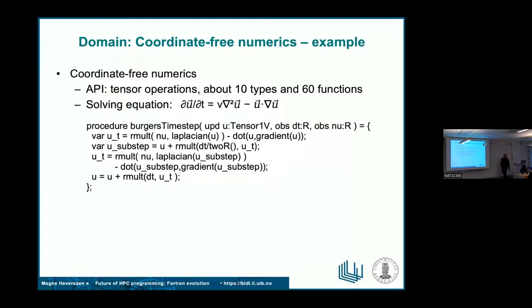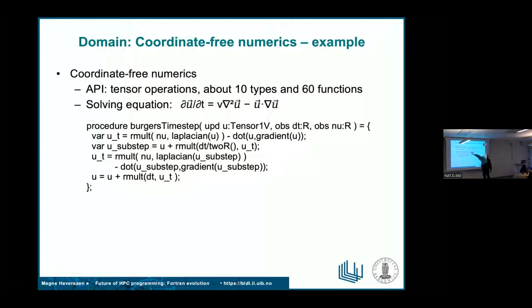To recapitulate an example from yesterday: there's the Burgers governing equation, some massaging for time integration gives you a half-step function, and putting them together gives the time step of the Burgers equation. You're using high-level operators at the tensor abstraction level, which is coupled to the physics abstraction level. These things have physical meaning — they're not just large multidimensional arrays of data.